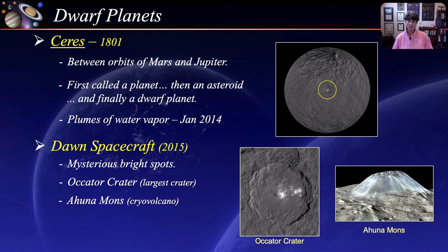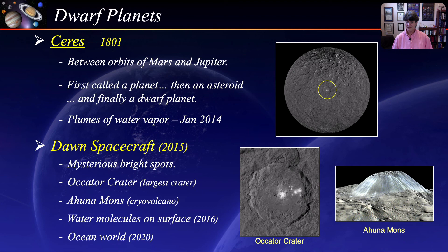In 2016, Dawn found definitive evidence of water molecules on the surface of Ceres. And in August of 2020, NASA confirmed that Ceres is an ocean world with an extensive reservoir of seawater beneath the surface.